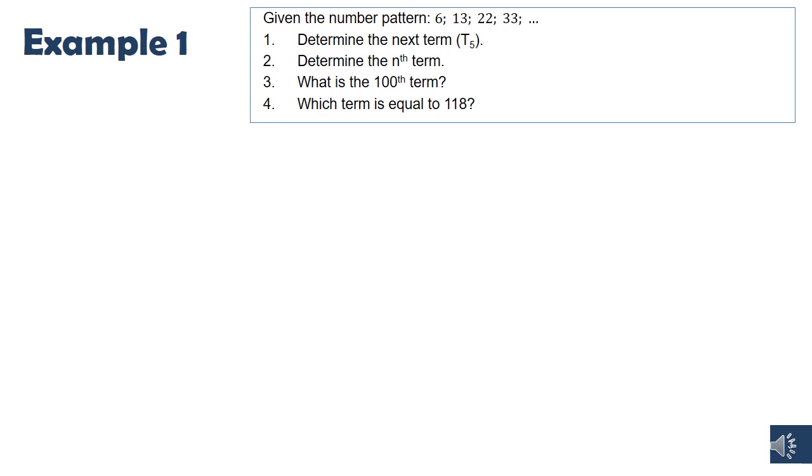So let's start out by writing out our terms just like we did with linear patterns. Term 1 is 6, 2 is 13, 3 is 22, and 4 is 33. And then because we're not told what type of pattern it is, we need to start by taking the differences of consecutive terms to see if we can work out the different types of pattern.